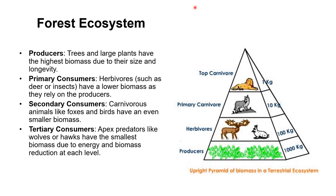In the forest or terrestrial ecosystem, the pyramid of biomass is upright. Producers' biomass per square meter or per unit area starts at, for example, 1000 kg. This supports the herbivore population, whose biomass is about 100 kg. Gradually, the biomass quantity is reduced at each level. So the pyramid of biomass is upright in the case of the forest or terrestrial ecosystem.